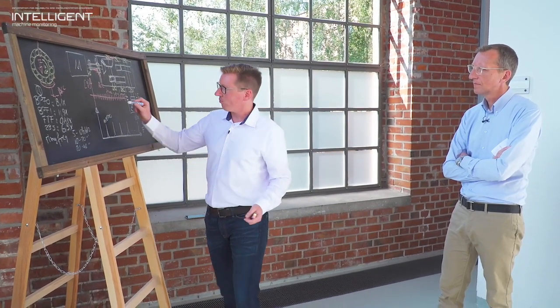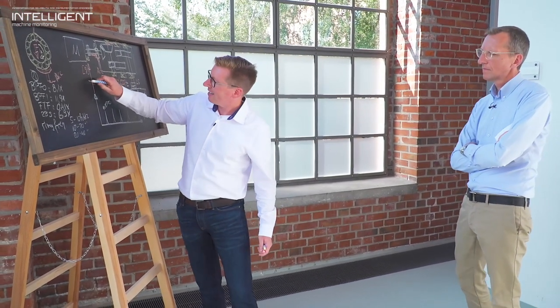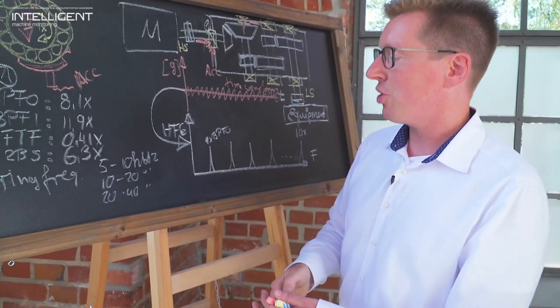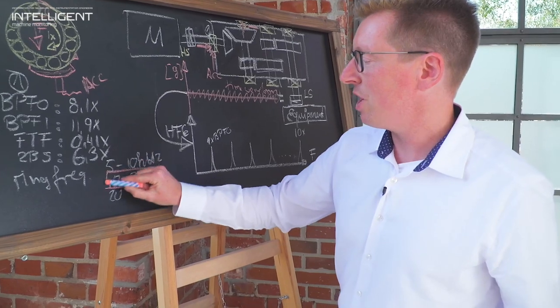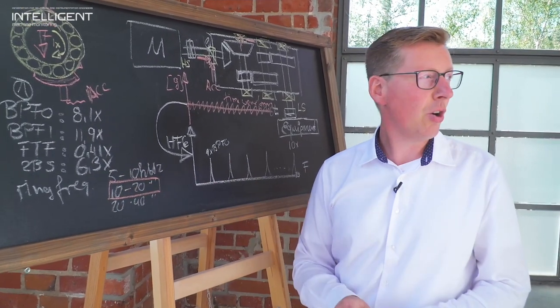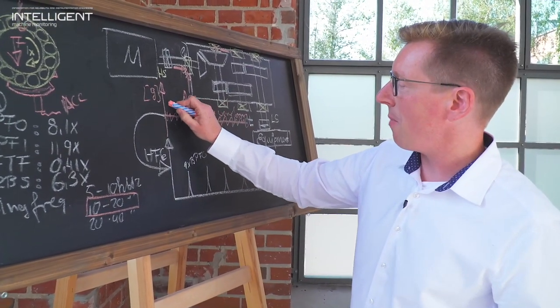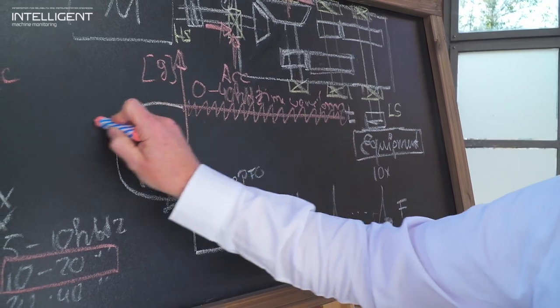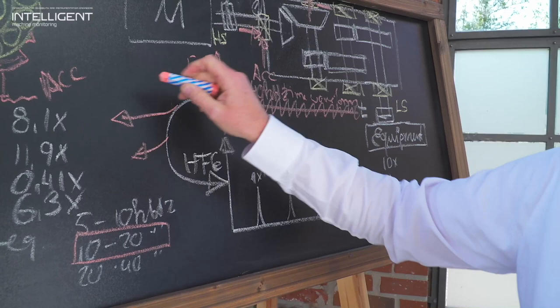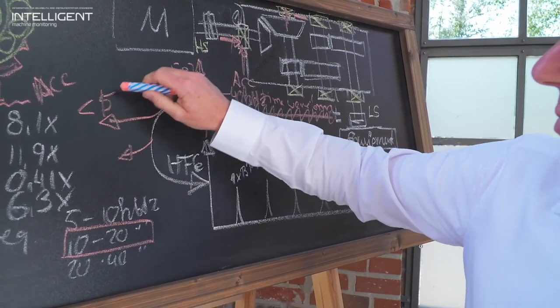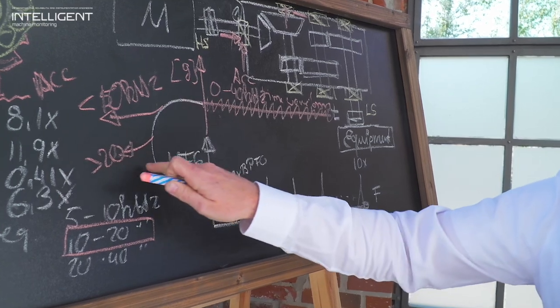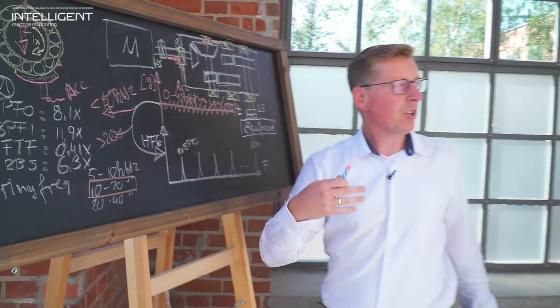As such, you would take the time waveform raw data and run this through a so-called HFE process. Say my bearing of choice has a focus frequency we think will be excited between 10 to 20 kilohertz. We take the full time waveform data, which may be between 0 and 40 kilohertz, and out of this full frequency range we would subtract and eliminate all frequency content below 10 kilohertz and everything above 20 kilohertz. The HFE stands for high frequency enveloping.